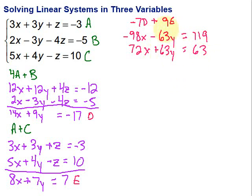Notice we have those opposites here, which is exactly what we want. So we're going to add these vertically. So I have negative 98 plus 72. Again, just adding vertically. So we do that, and we get negative 26x. The y's cancel out, and that's equal to 119 plus 63, which is 182.